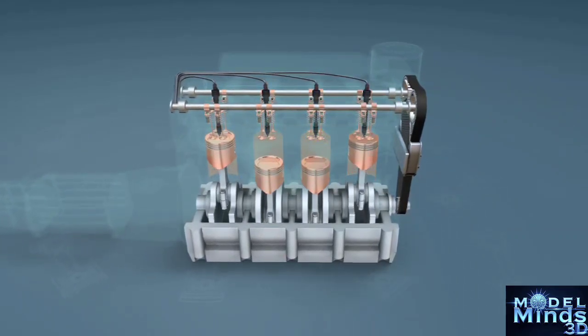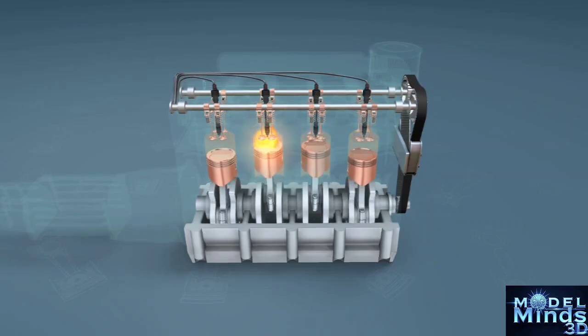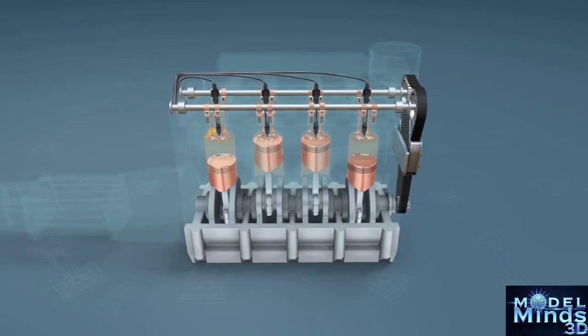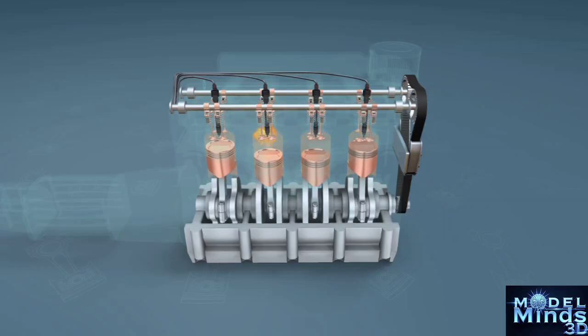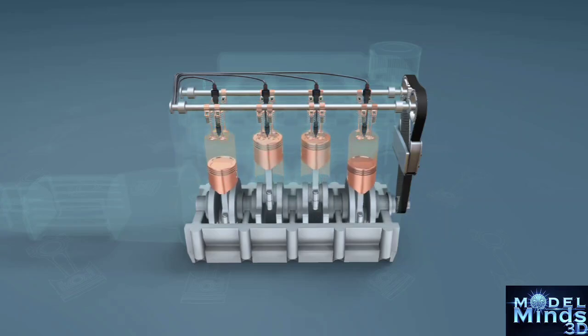The power stroke unleashes chaos—diesel fuel detonates in a firestorm, or petrol's spark triggers an explosion, slamming pistons down to spin the crankshaft, a twisted metal spine converting punches into rotation.